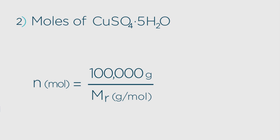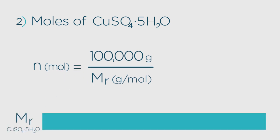Using your periodic table, you can work out that this is 63.5 for the copper atom, plus 32 for the sulfur, 9 times 16 for the oxygens, and 10 times 1 for the hydrogens, altogether making 249.5 grams per mole.